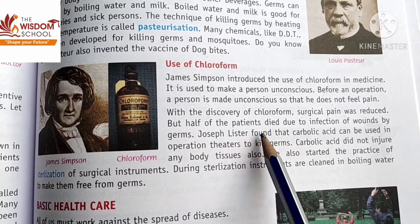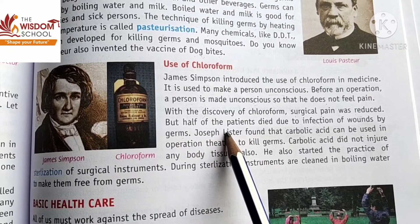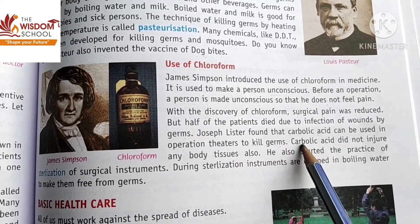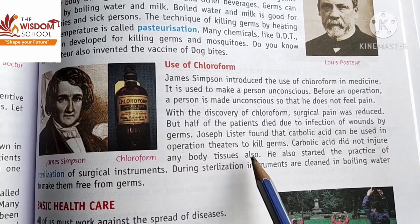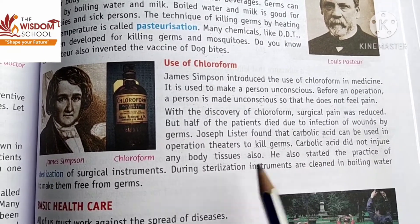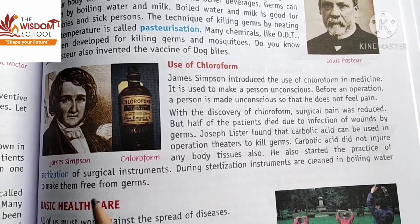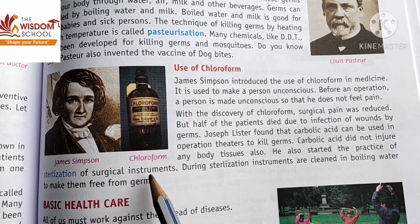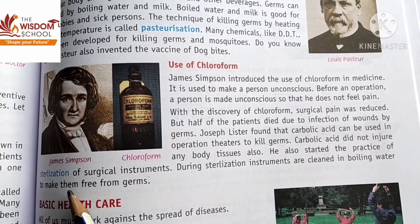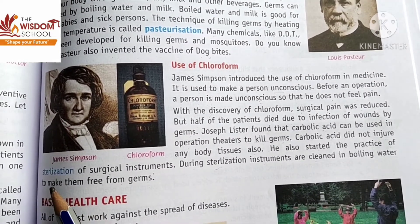Joseph Lister found that carbolic acid can be used in operation theaters to kill germs, and it did not injure body tissues. He also started the practice of sterilization of surgical instruments. During sterilization, instruments are cleaned in boiling water to make them free from germs.